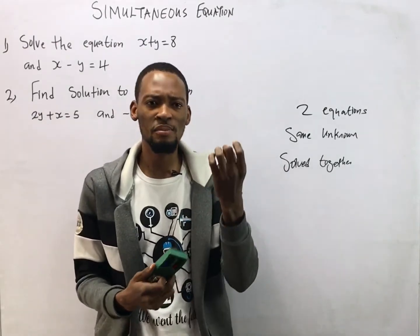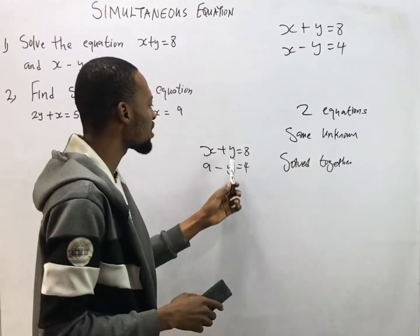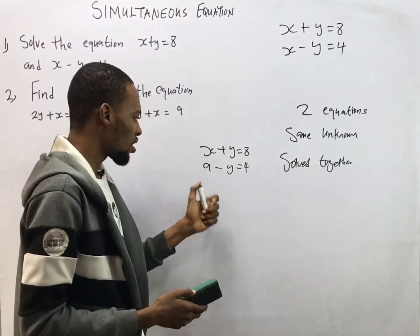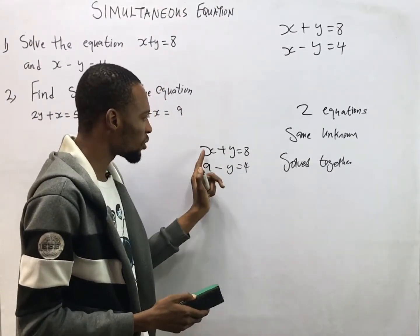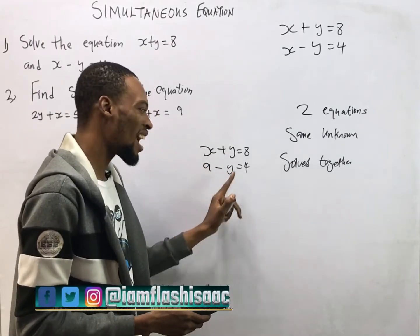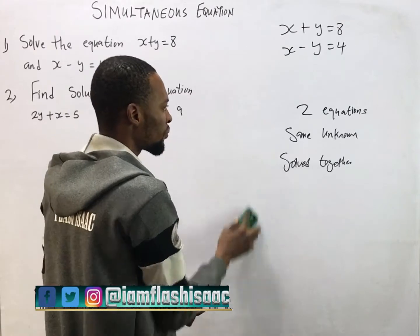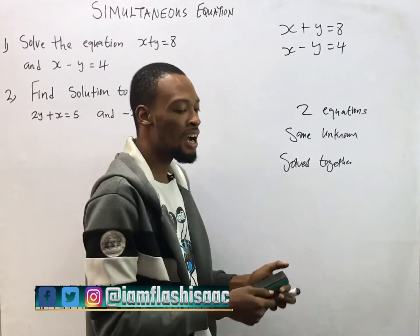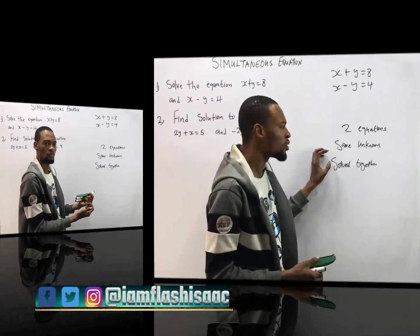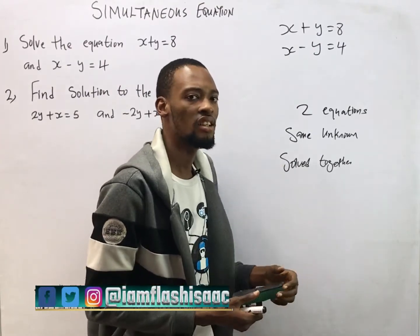This is what makes simultaneous equations. This is not a simultaneous equation because they don't have the same unknown — this is s, this is y. So for an equation to be a simultaneous equation, they must have the same unknown.